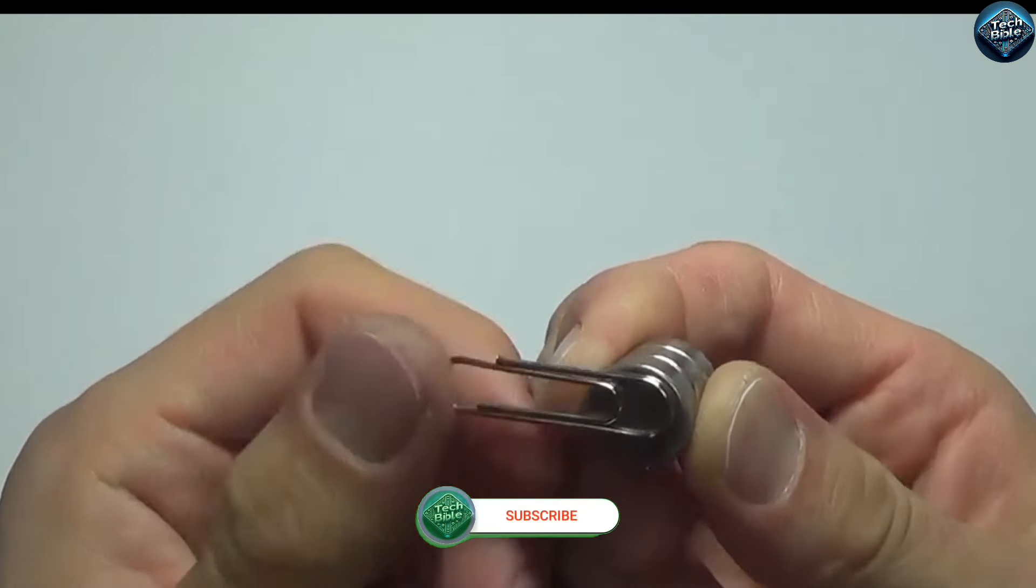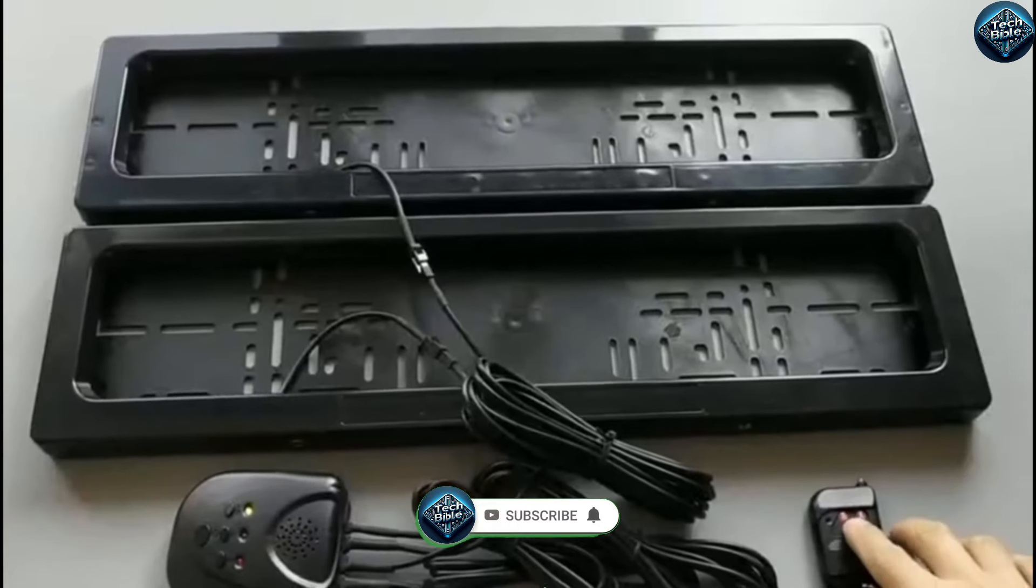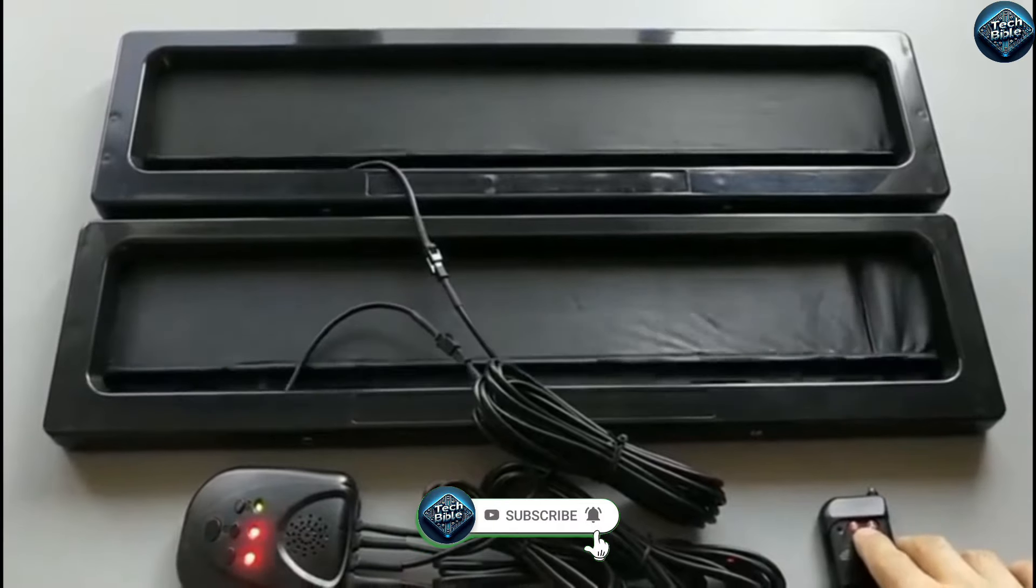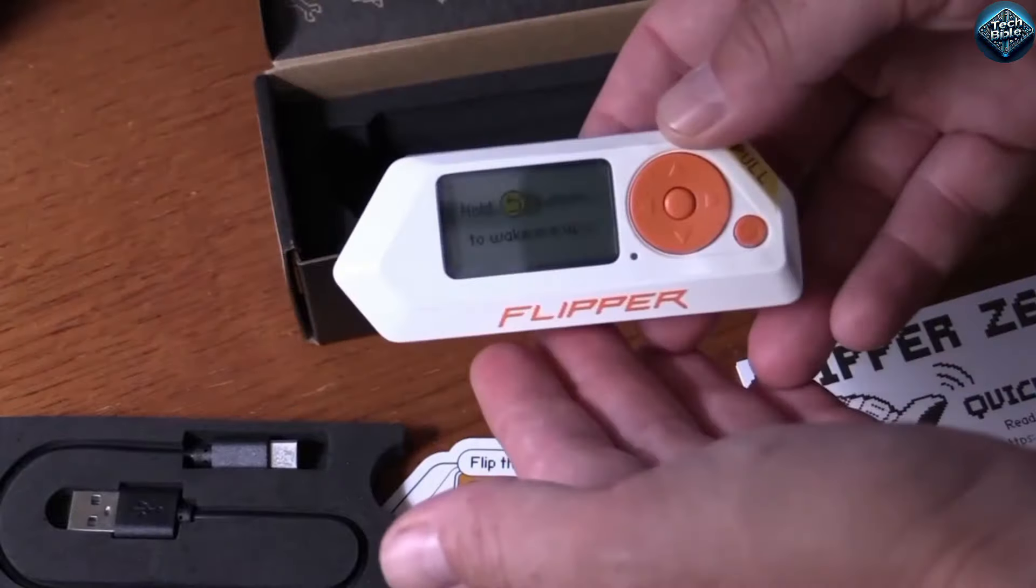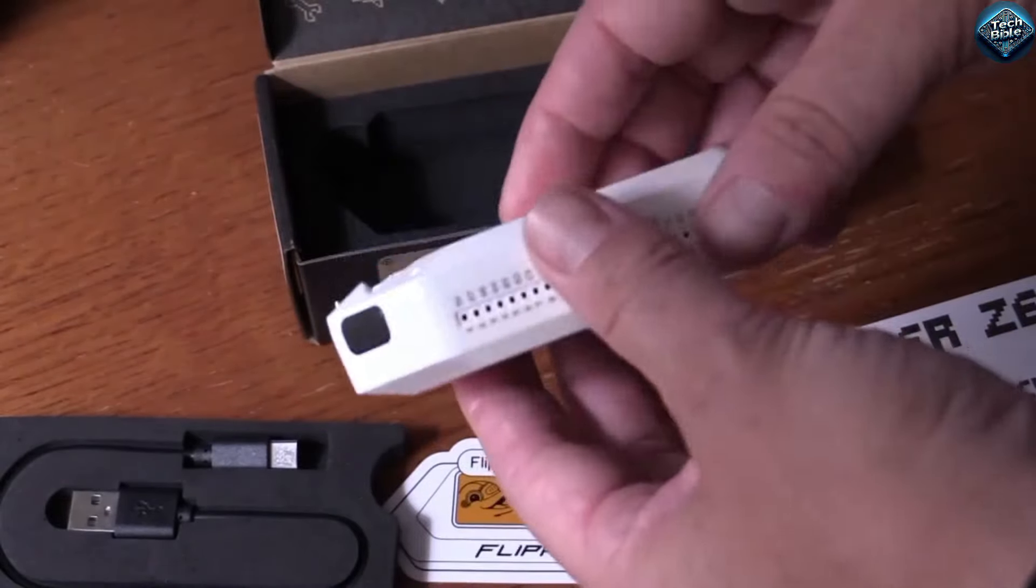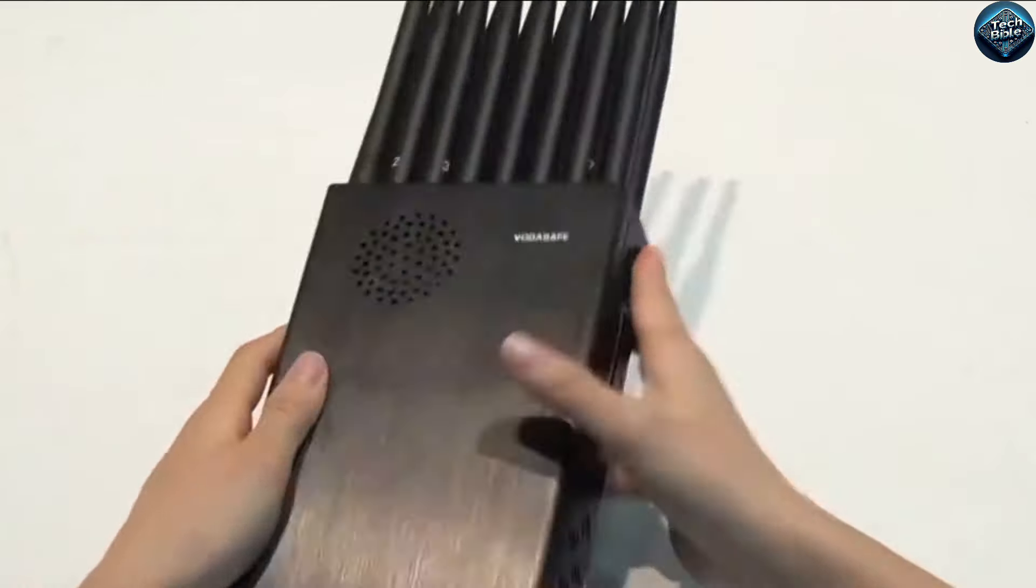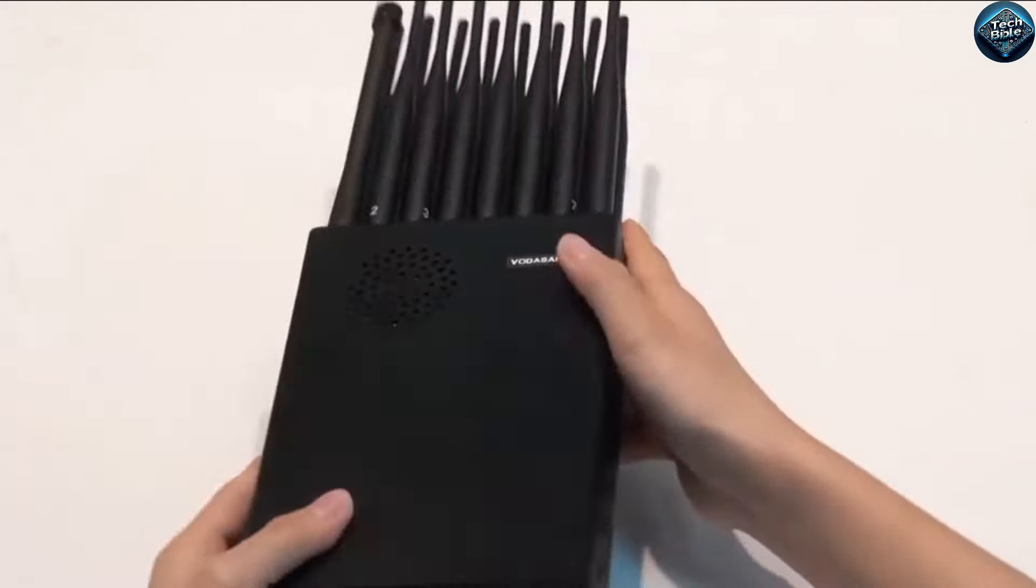We'll be exploring the Flipper Zero, License Plate Hider, MidZoo Spy Glasses, GSM Jammer, Security Tag Magnet Remover, ATM Skimmers, Magnetic GF07 Mini GPS Tracker, USB Destruct Hard Drive Eraser, and the Wi-Fi LED Light Bulb Camera. Stay tuned as we break down why these gadgets have been banned and the implications of using them.